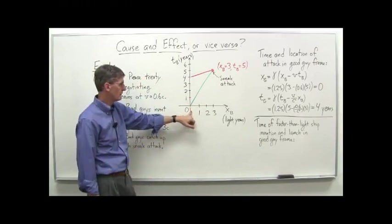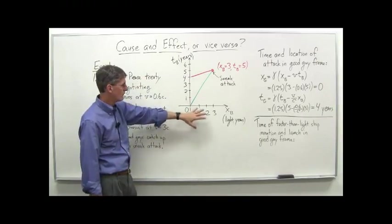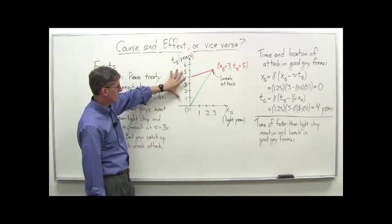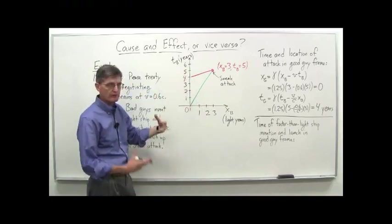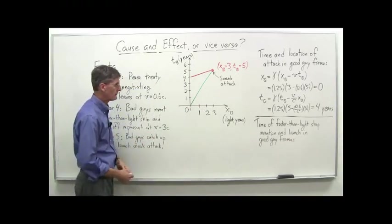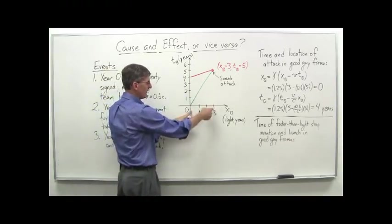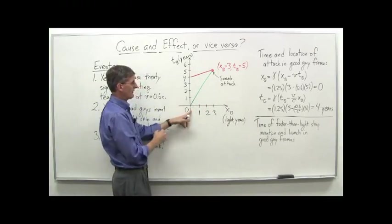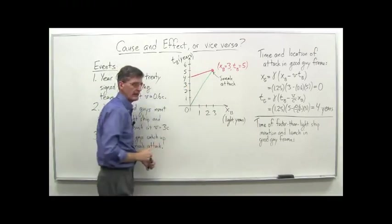So three light years per year is what their speed is. And over five years, then, the other ship goes five times 0.6c, which again is three light years. So they both end up three light years away from the bad guys' planet there. And that's where the sneak attack occurs.